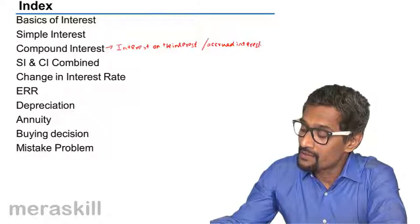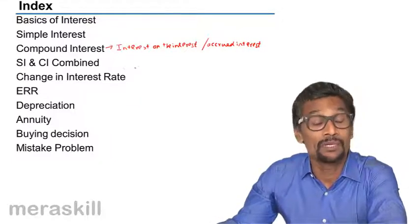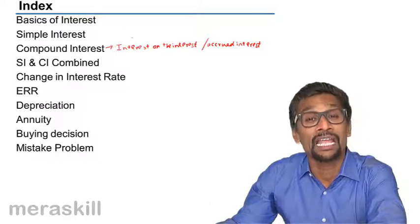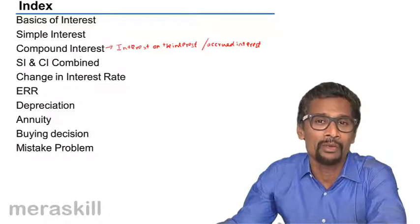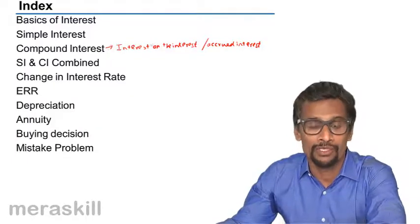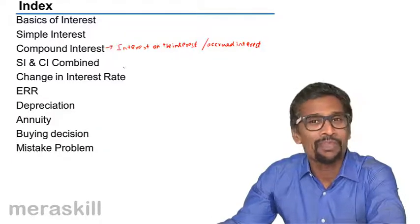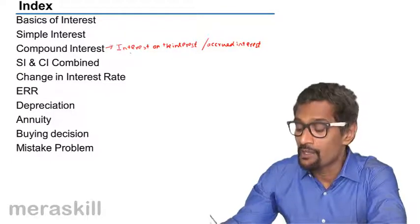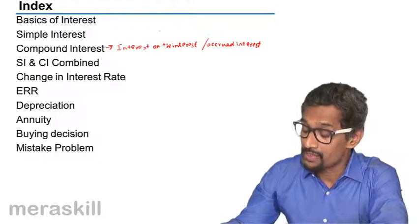That means during the first year there is a certain principal and the principal earns a certain amount of interest. At the end of the year that interest is added to the principal and that becomes the amount. For the following year, whatever is the amount at the end of one year becomes the principal for the next year. So we'll be taking up a few problems based on compound interest.